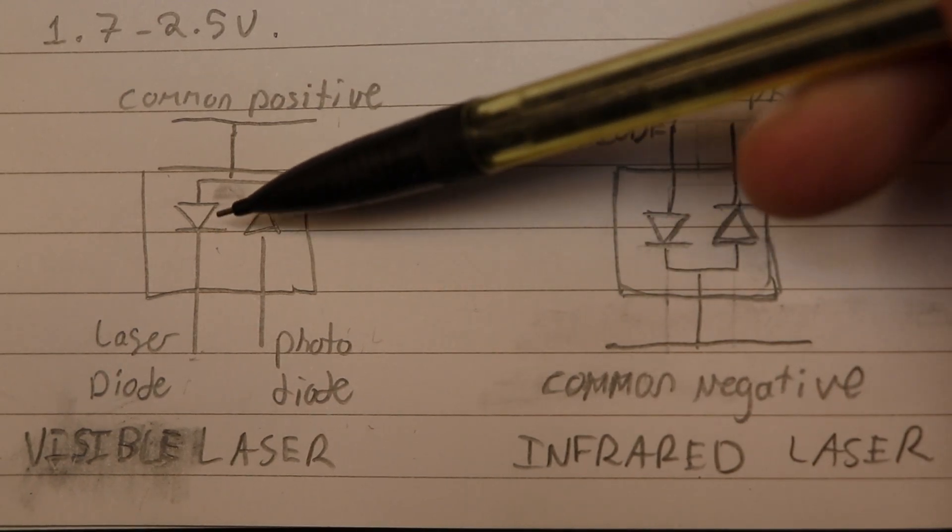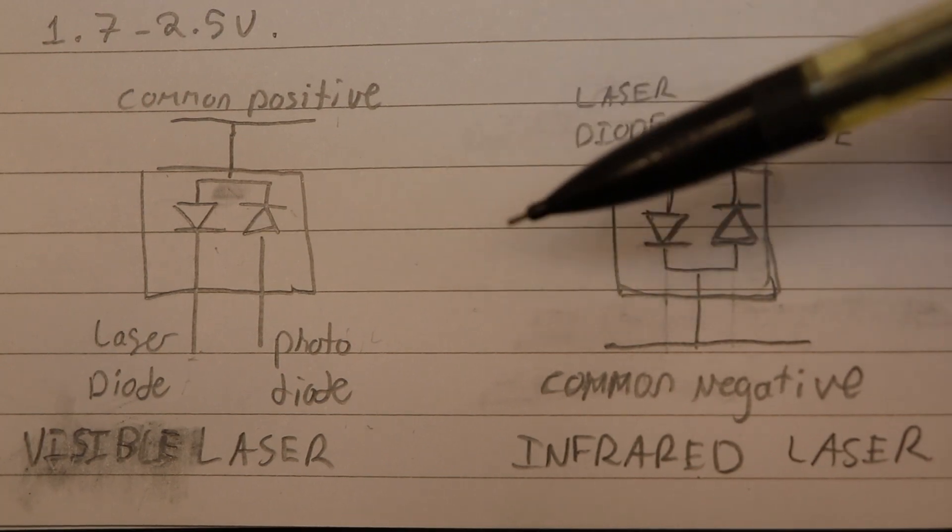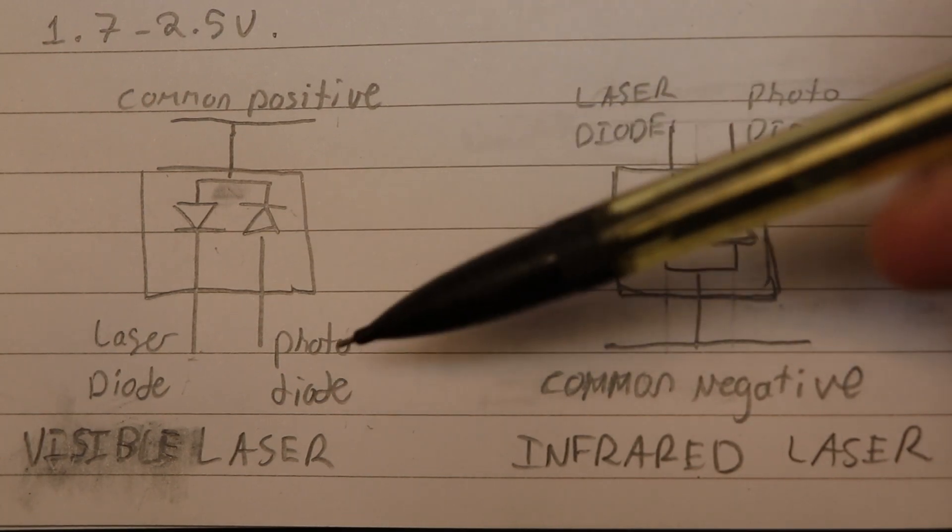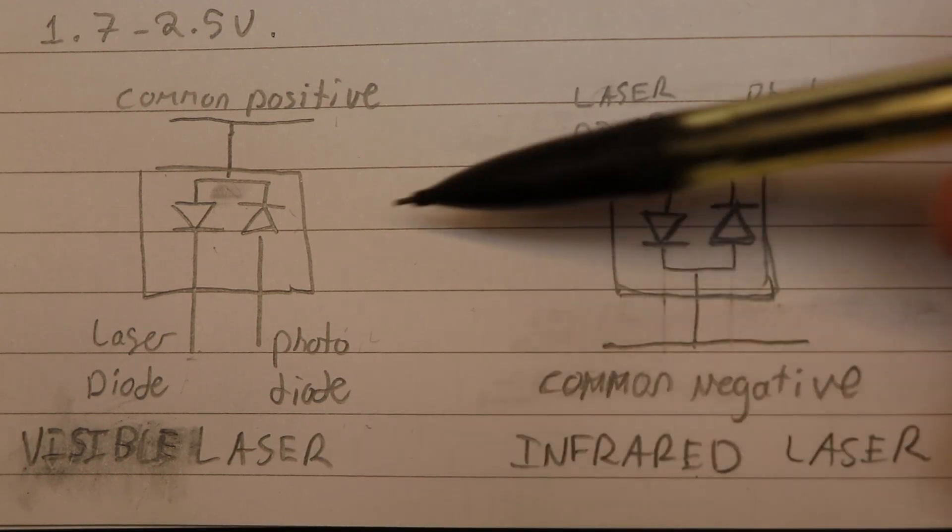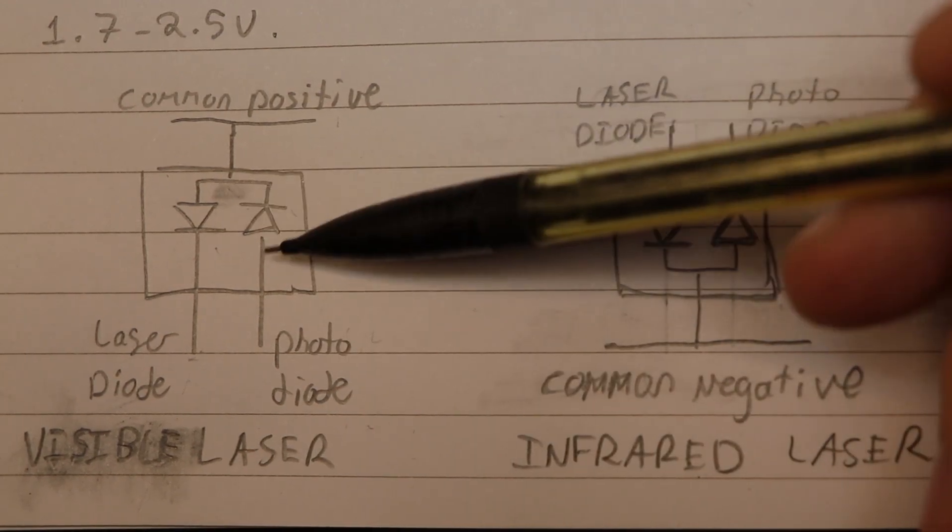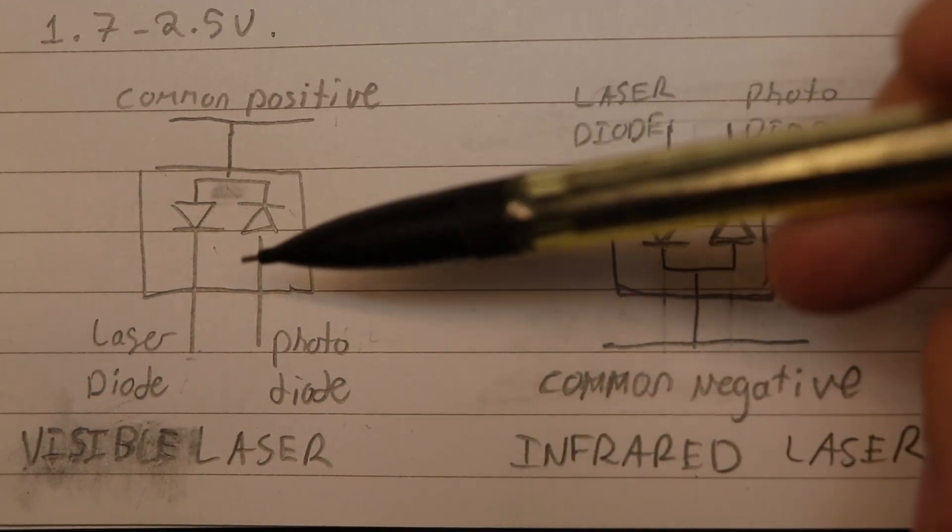So the photo diode is there just to act as a feedback, a light sensor if you will, just to detect some of the light that's coming off the laser.